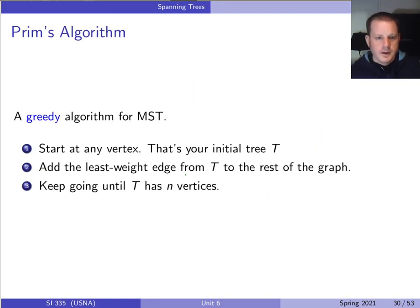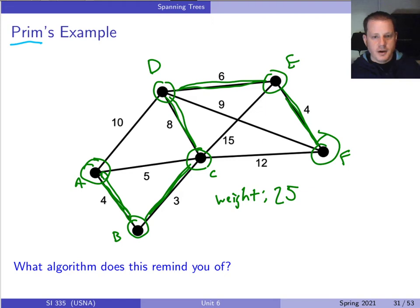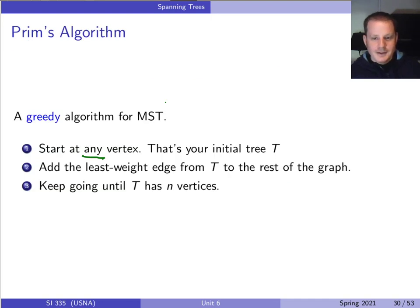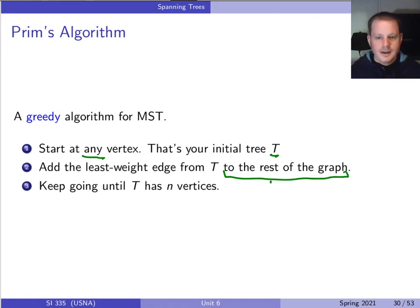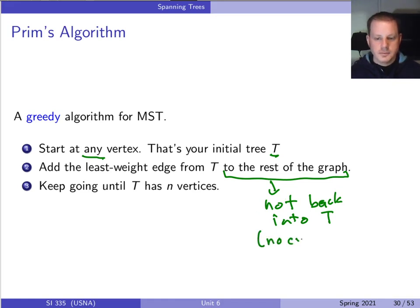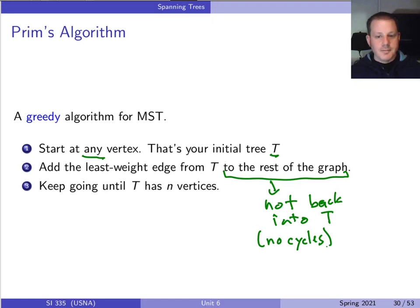That's Prim's algorithm. You start at any vertex, then repeatedly add the least-weight edge from the current tree to the rest of the graph — meaning edges that go to vertices not yet in the tree, avoiding cycles. At each step you add one more edge and one more vertex, until you have n-1 edges and n vertices. It actually works to give the minimum spanning tree.